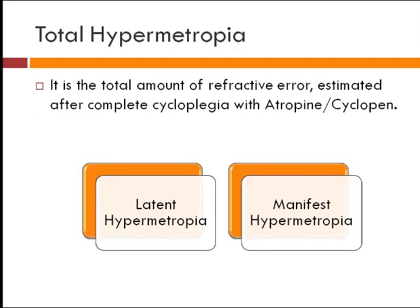What is total hypermetropia? It is the amount of refractive error estimated after complete cycloplegia with a drug like atropine or cyclopentolate. We discussed accommodation before — accommodation gives the ciliary body its tone. Before the age of 15 years accommodation is at its peak, which decreases with age. If a child presents with a certain refractive error you may not be sure, because they may be using their accommodative power. To calculate the exact total hypermetropia you must paralyze the ciliary body, taking accommodation out of the equation.